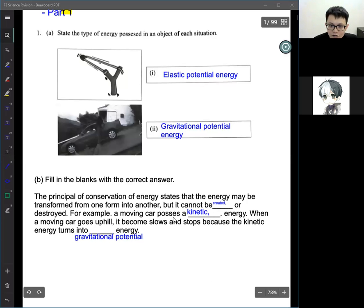How to answer this question? The principle of conservation of energy states that energy may be transformed from one form to another, but it cannot be created or destroyed. For example, a moving car possesses kinetic energy. When a moving car goes up, it slows down and stops, because kinetic energy turns into gravitational energy. But the main thing that we want to learn is conservation of energy. Energy cannot be created, cannot be destroyed, only can be transformed.